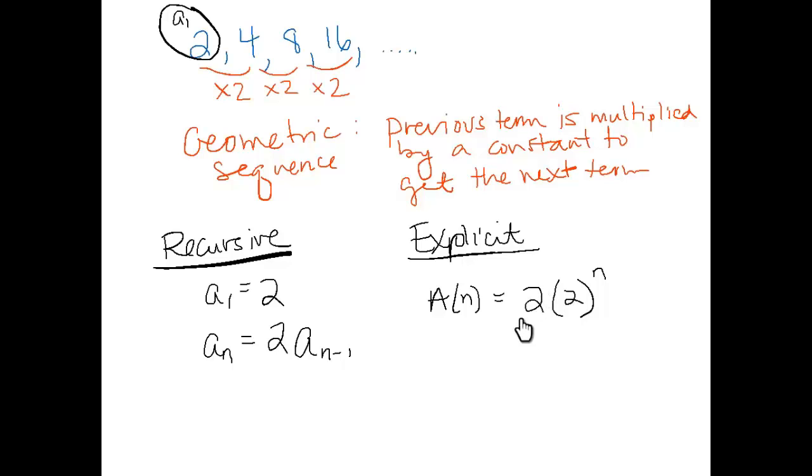You always put the term here that you're working with, whatever the pattern was here, so in this case it was multiplying by 2, and this, whatever the variable was, always had a connection to this term. So if you're calling this term the first term, something here should reflect that. So I'm going to put n minus 1, just as you would for an arithmetic sequence.